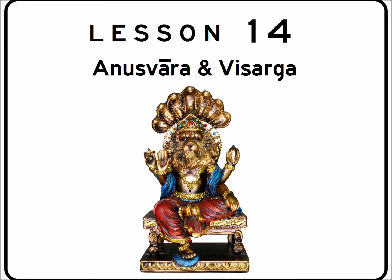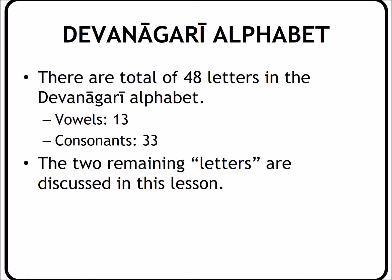So now we're going to move on to the topic of today, which is the Anusvara and Visarga. If you remember from the very beginning of our series, we discussed the Devanagari alphabet and talked about its properties, characteristics, and structure. There are 48 letters. We studied the 13 vowels in lessons one through three, and the consonants from lessons four through eleven. However, 13 and 33 leads to 46 — so what are the two missing letters we didn't discuss? We're going to cover that in today's lesson.